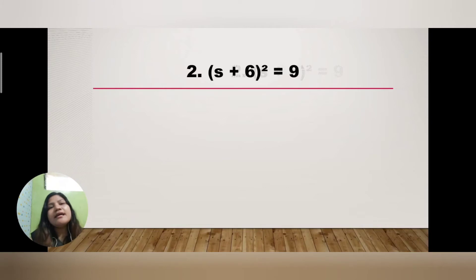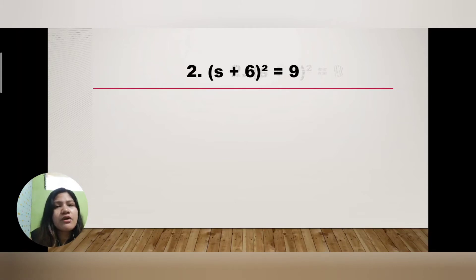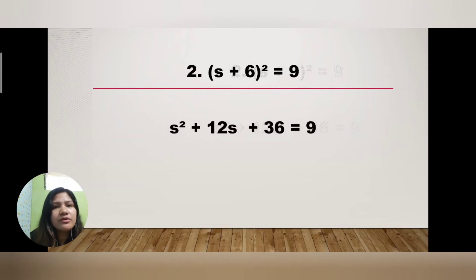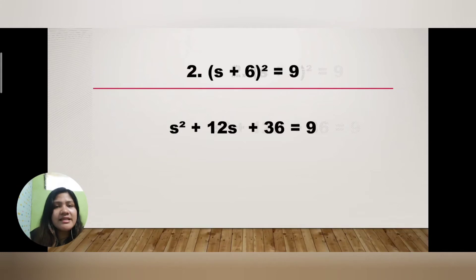Example number two: (s + 6)² = 9. The quantity (s + 6)² is the same as (s + 6)(s + 6), but we'll use a shortcut. Focus on (s + 6)²: first, square the first term s — s times s is s². Next, multiply the exponent 2 by the first term s and by 6: 2 times s is 2s.